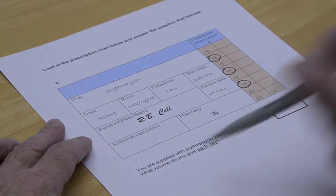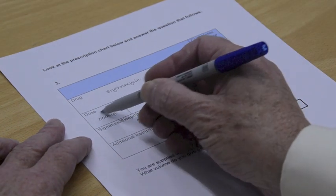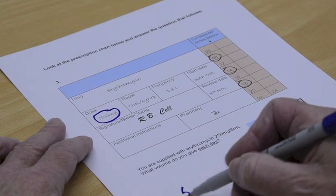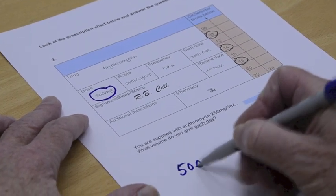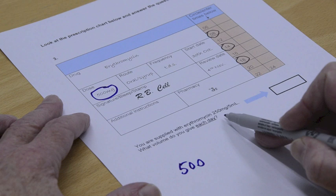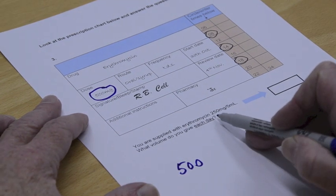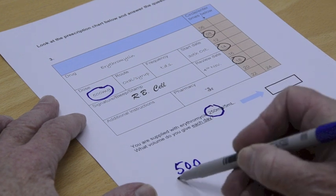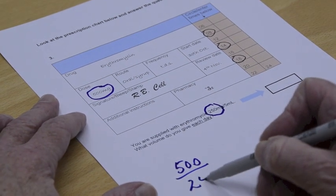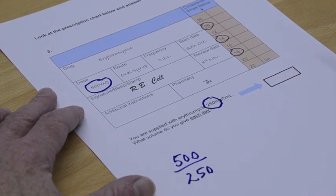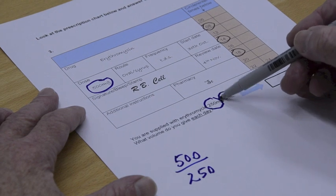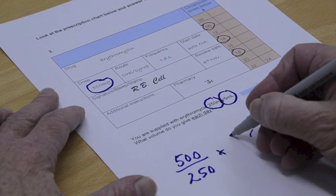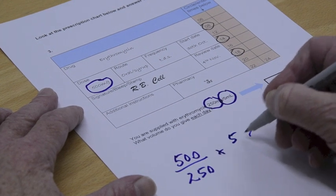Okay so let's see what we've got. Now what they want is 500 milligrams. There's our 500 and the question is saying here you're supplied with erythromycin 250 milligrams so that gives us our 250 but in this case it's actually mixed in with 5 mils of fluid, in this case syrup.